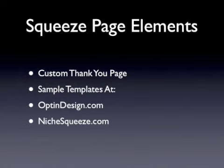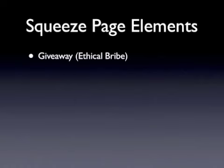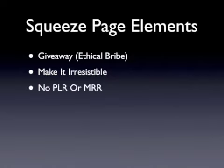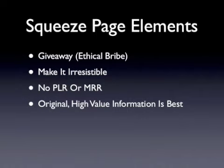To help you get started, here are a couple of high-quality squeeze page templates available for purchase at optindesign.com and nichesqueeze.com. One thing you need to focus on more than anything else is the actual giveaway — the ethical bribe — that you are offering your subscribers. You will need it to be absolutely irresistible and unique to your website. This isn't the time to use PLR or MRR products. You want to showcase original, high-value information for free. Consider writing a report yourself or hiring an affordable writer, and make sure you are featuring your own exclusive content to maximize signups and grow your list.